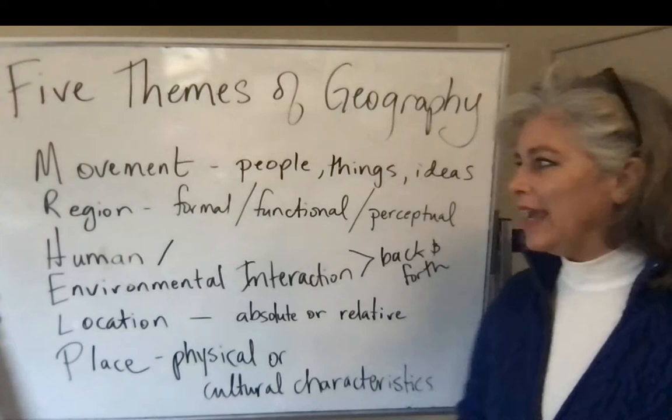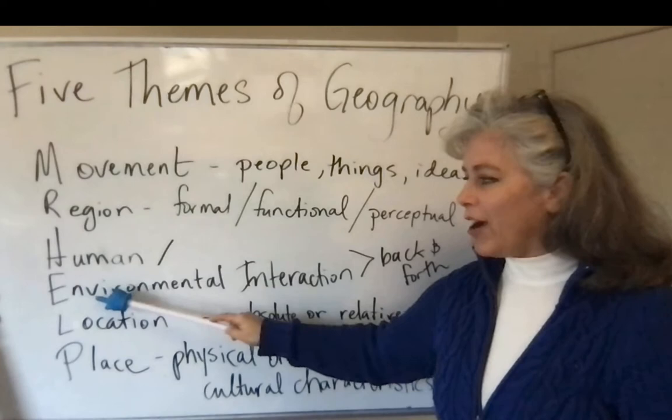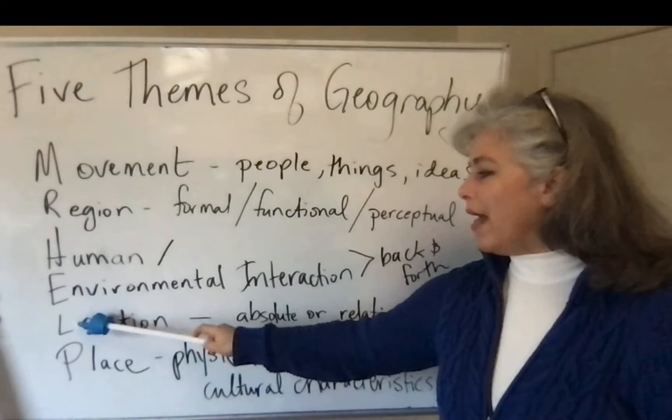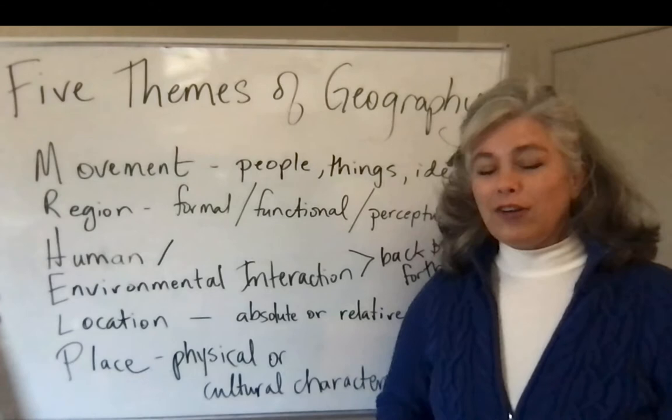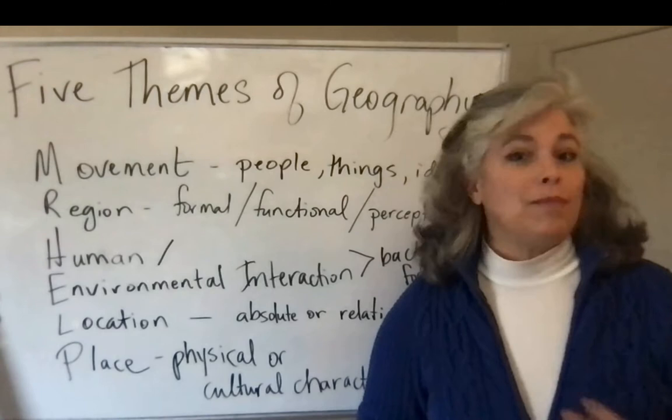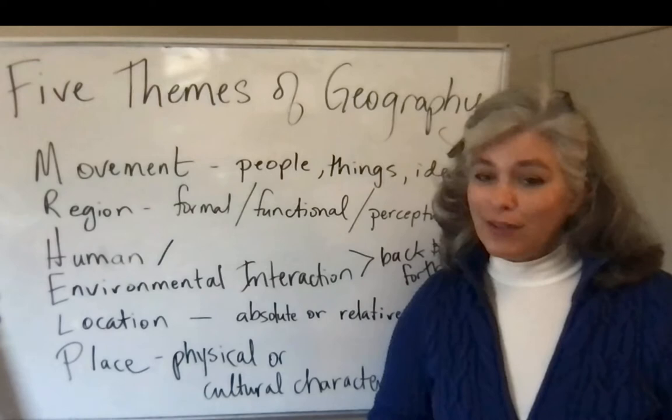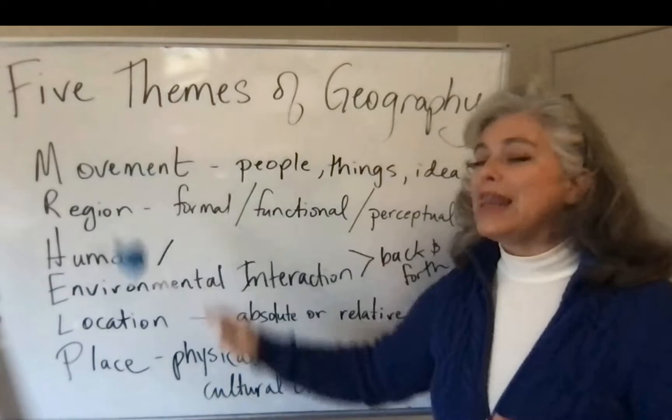M is movement, R is region, H-E is human-environmental interaction — those two things go together, the H-E in HELP. L is location and place. Let's talk about location and place first because they're sort of the easiest to wrap your brain around. They're not uncomplicated, but they are the least complicated to explain. I believe the textbook also reorganizes it so that they start with location first.